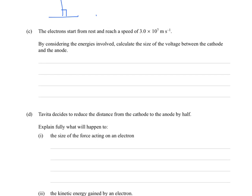C. The electrons start from rest and reach a speed of 3.0 times 10 to the 7 meters per second. By considering the energies involved, that's a huge clue, calculate the size of the voltage between the cathode and the anode. Okay, so you could do this without a lot of knowledge of what's going on, as long as you understand the energy has to be conserved.